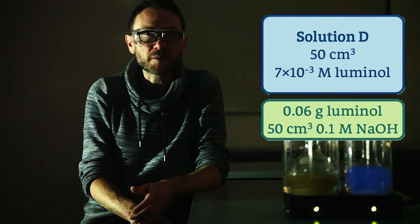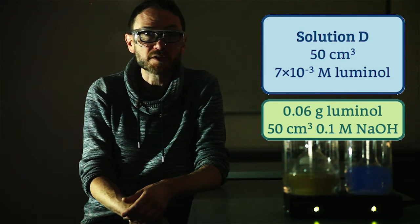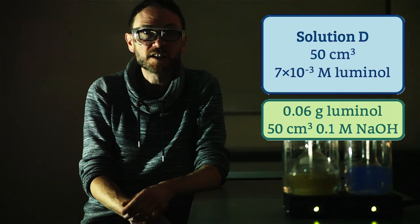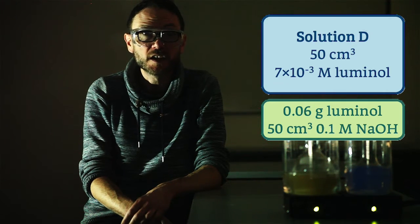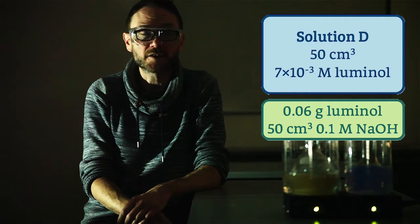If you don't have any 0.1 molar sodium hydroxide made up, of course you can just add 0.2 grams of sodium hydroxide pellets to 50 cm³ of deionized water. You cannot substitute, as I mentioned before, for ammonium hydroxide.